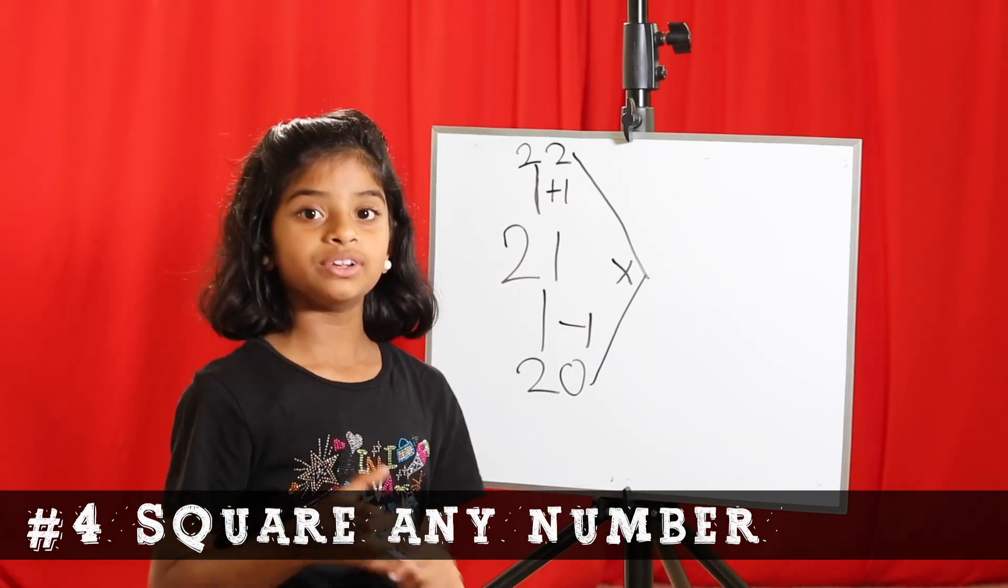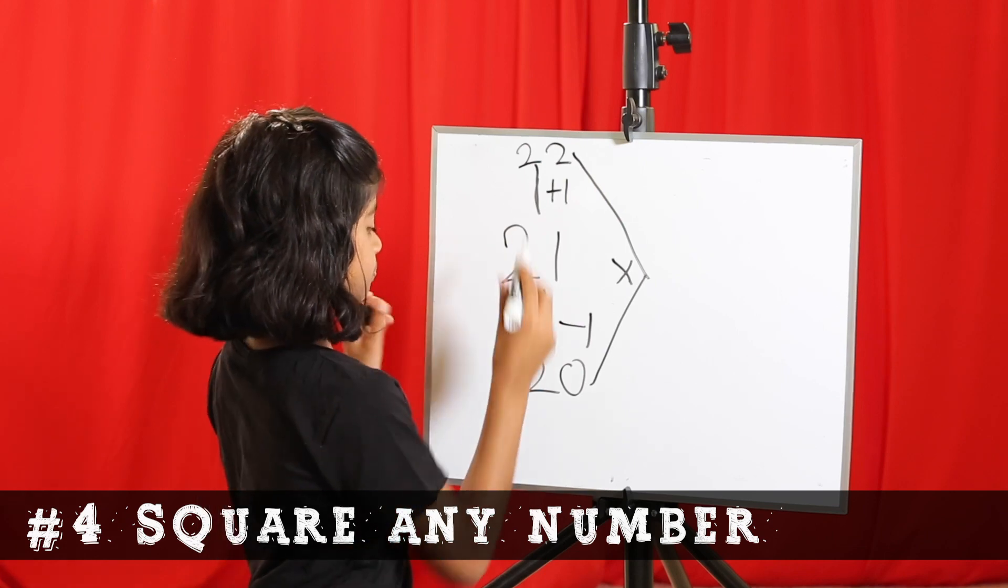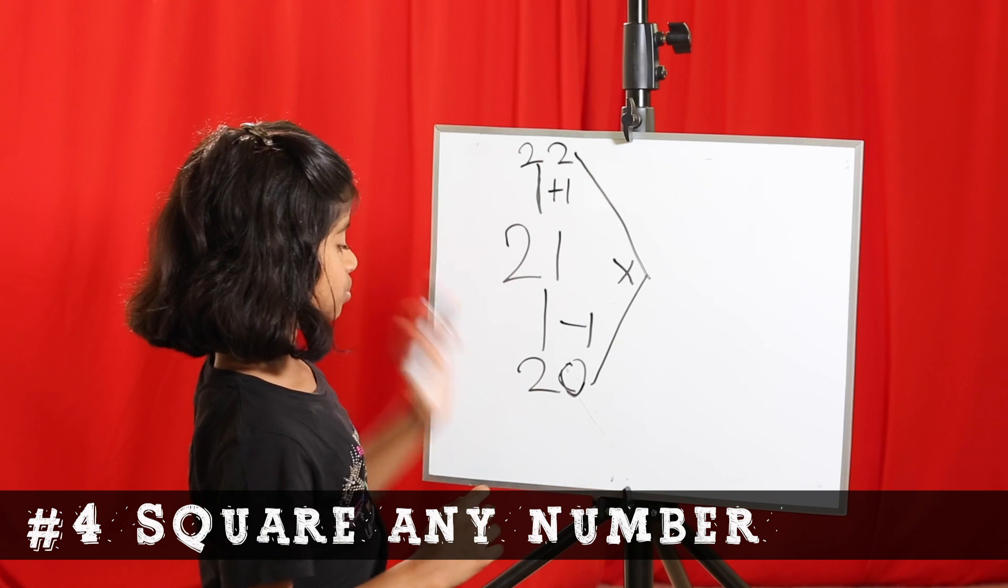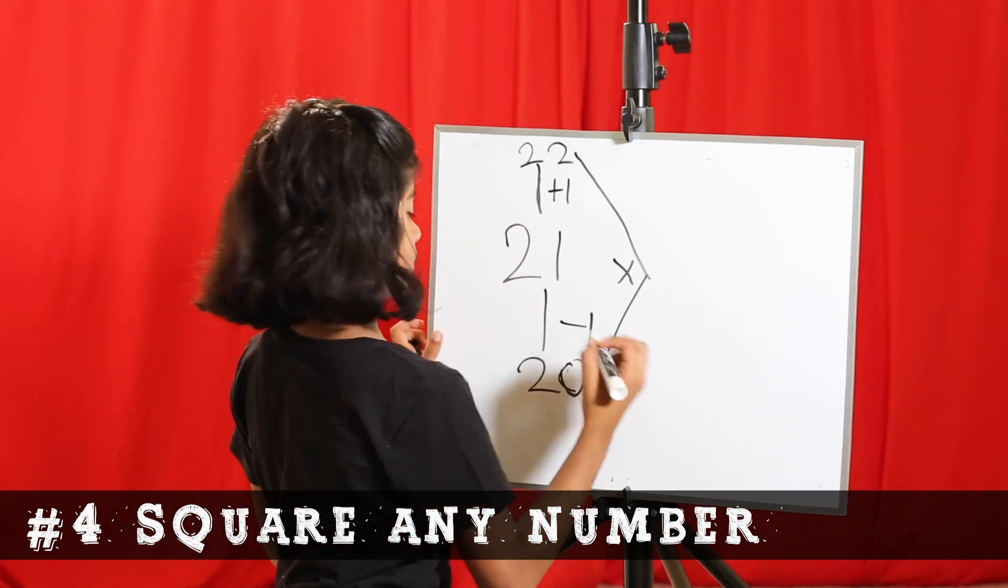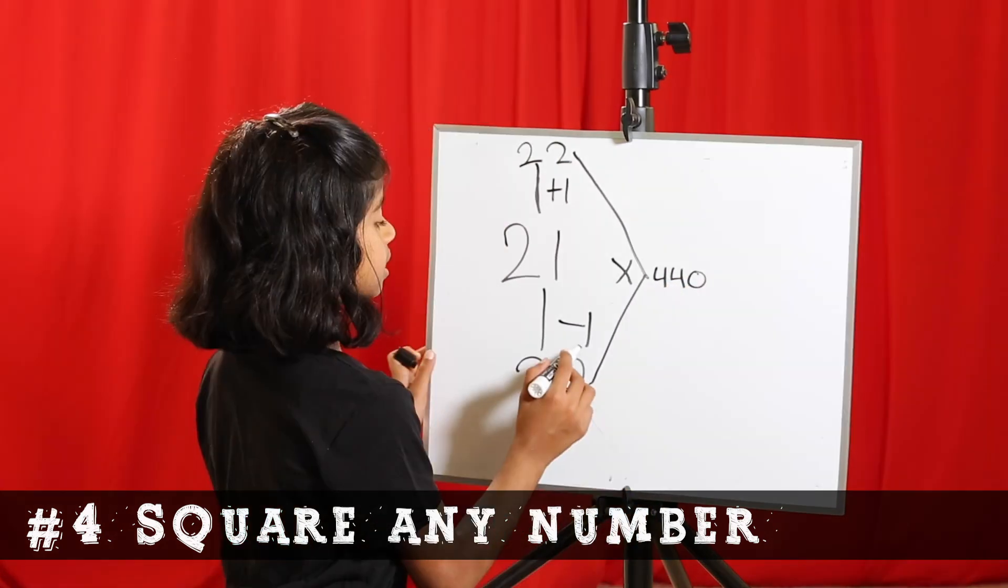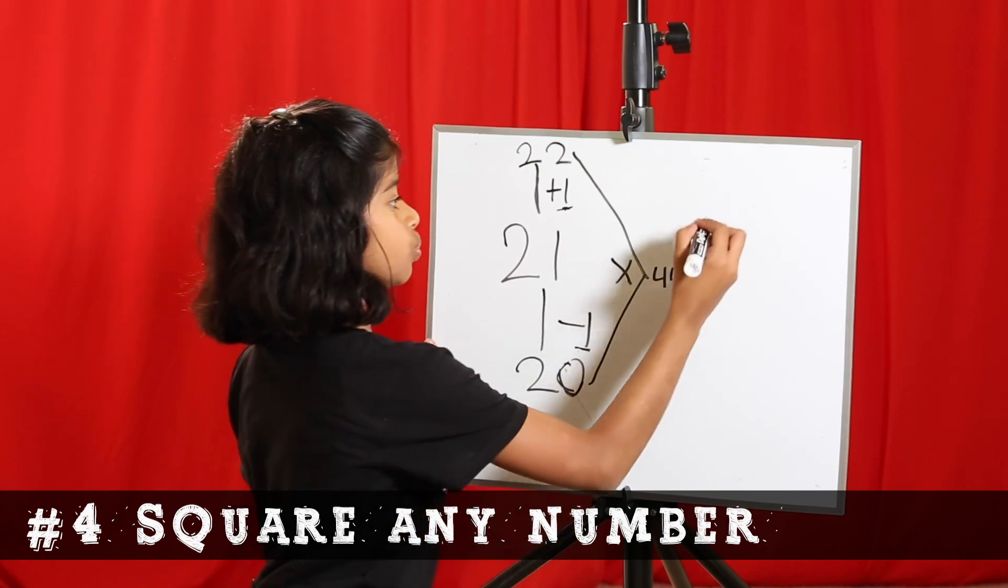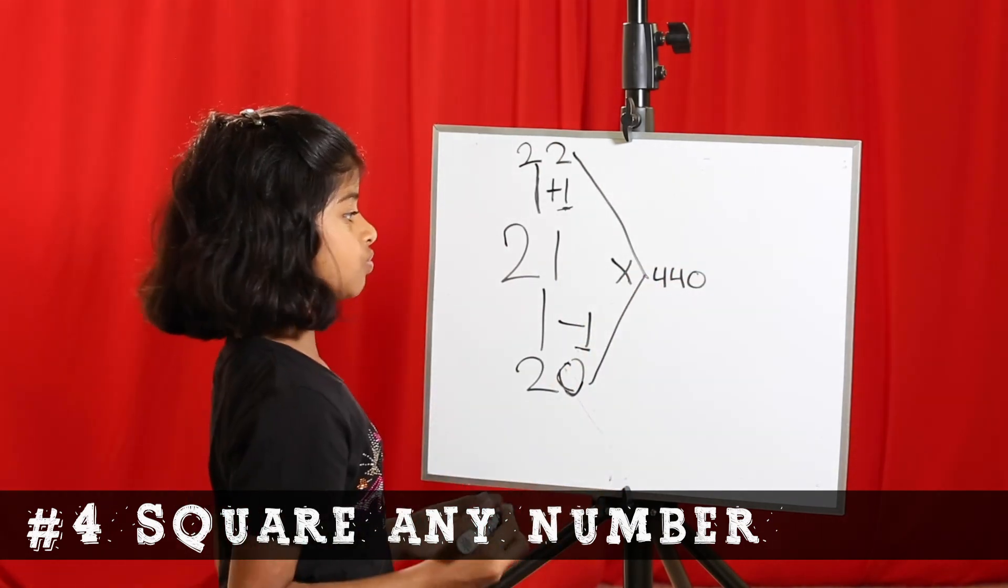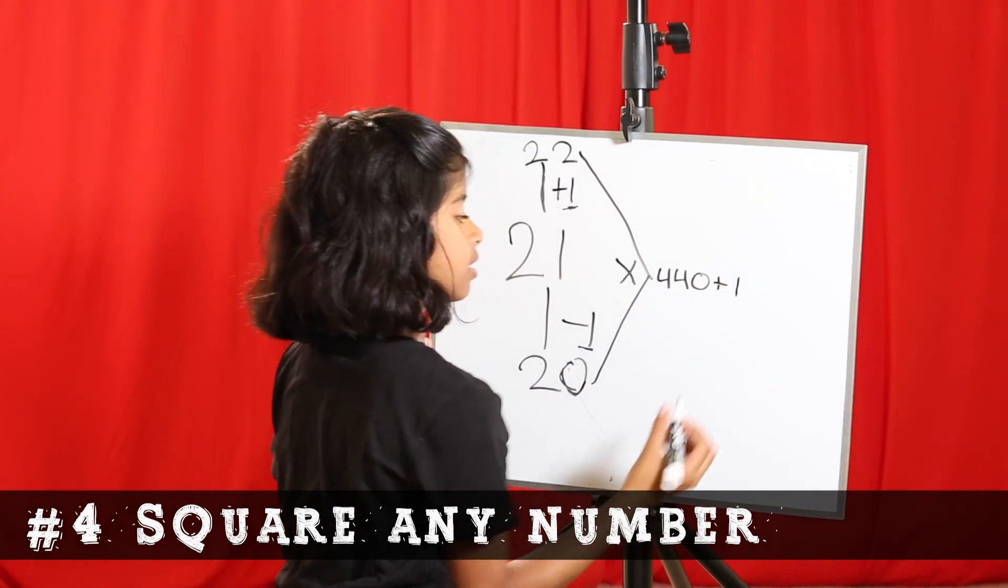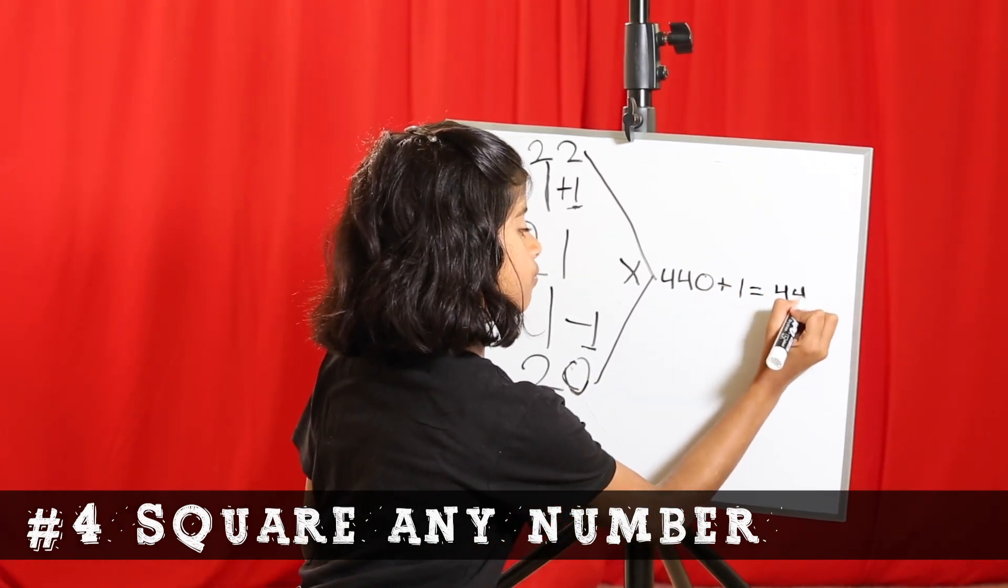Remember the first trick we did multiplying by 10. So we forget about this. Then we do 22 times 2 which is 44. Then we add a 0, so it will be 440. We take the number here and here which is 1 and square it. 1 square is 1. So we do 440 plus 1 which is 441.